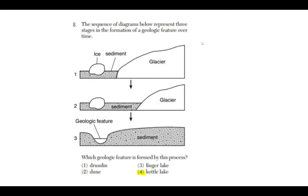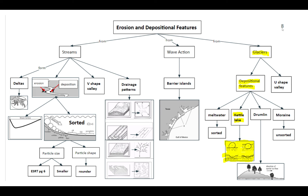Number eight: the sequence of diagrams below represents three stages in the formation of geological features over time. The correct answer is four, kettle lake. Kettle lakes form when a glacier drops a large piece of ice as it's melting. Sediments get deposited on top of that ice, and it gets buried. Eventually that ice melts, forming a small lake called a kettle lake. If you go to your Regents Review Packet page eight, you'll see kettle lake listed as a depositional feature for glaciers.